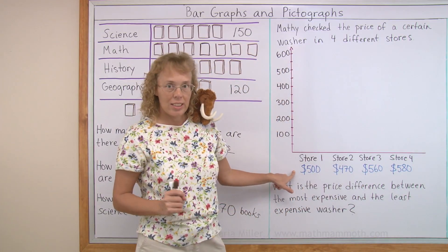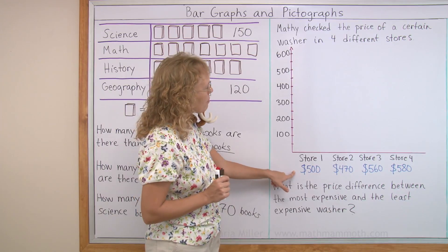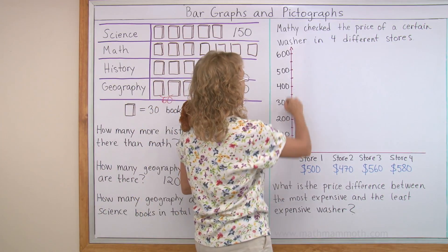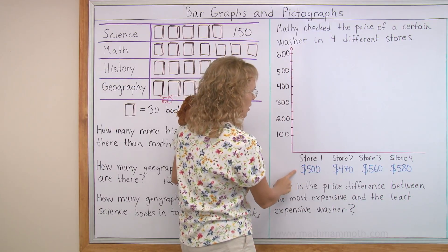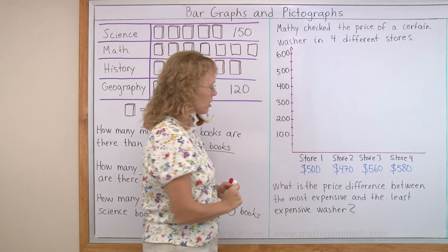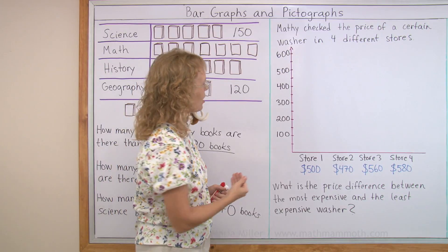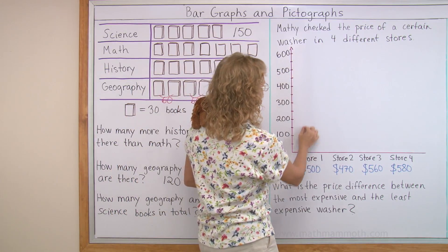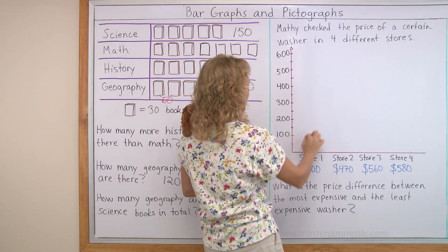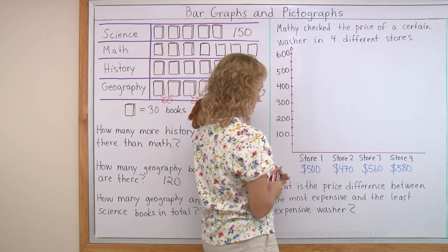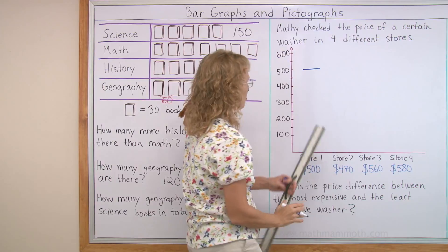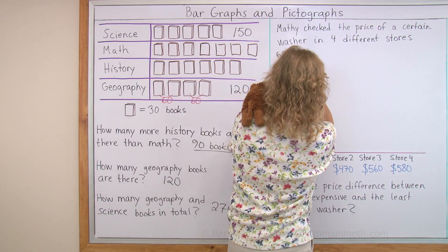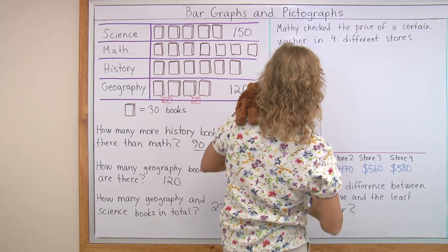Our task is to draw a bar graph now. And we have here an axis going up and these numbers are the dollar amount. In store one, the washer costs $500. So I need to now draw here a rectangle that goes up to 500. Kind of like this. So let me draw here. It has to be that high. There.